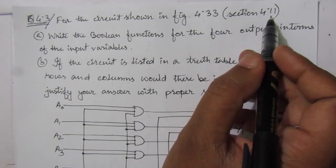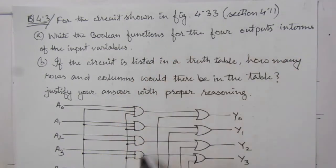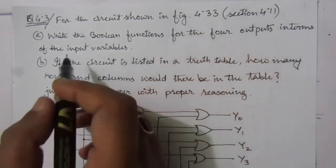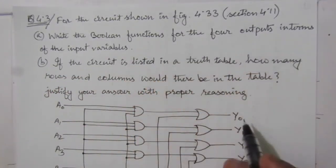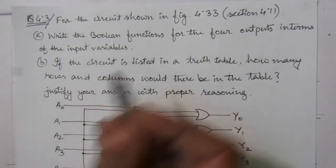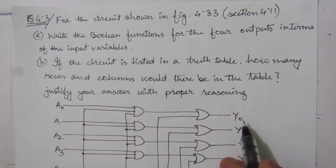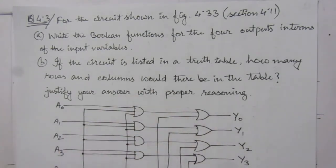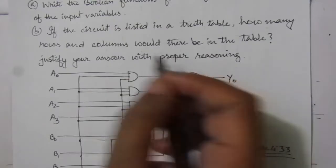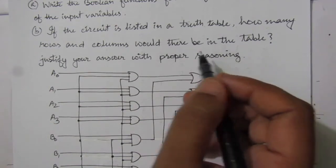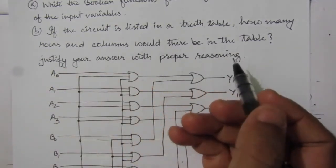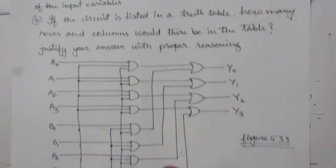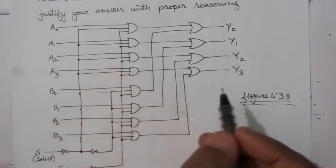In section 4.11 we have figure 4.33, which I have drawn here. From this figure we have to find out the four outputs Y0, Y1, Y2, and Y3 in terms of the input variables A0 to A3 and B0 to B3, the select line S, and the enable. In the second part of the question we are asked how many rows and columns will be in the table.